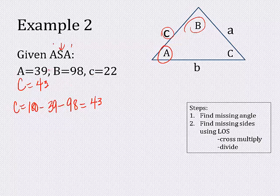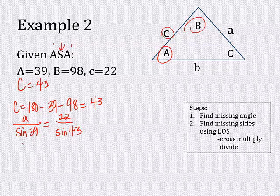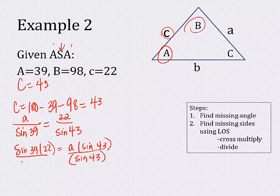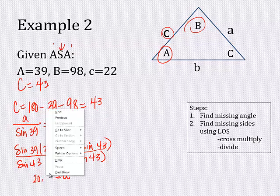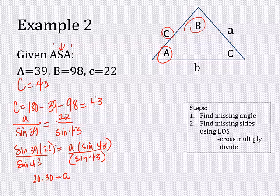Now find little a or little b — it won't matter which you do first. For little a: little a over sine of 39 equals little c over sine of 43. Cross multiply: sine of 39 times 22 equals A times sine of 43. Divide by sine of 43 to get A by itself. The result is little a equals 20.33.